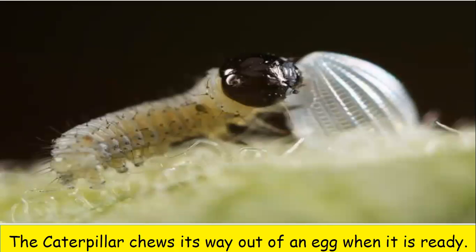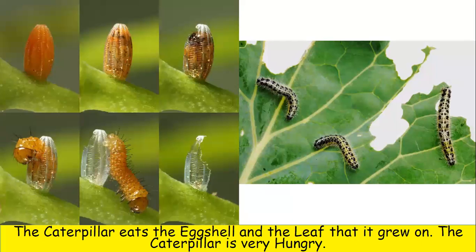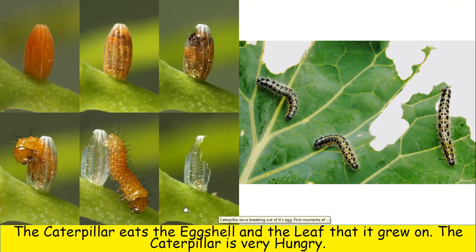The caterpillar chews its way out of an egg when it's ready. The caterpillar eats the eggshell and the leaf that it grew on. The caterpillar is very hungry. Here you see the caterpillar slowly coming out of the egg by eating it, then coming onto the leaf and starting to eat the leaf.